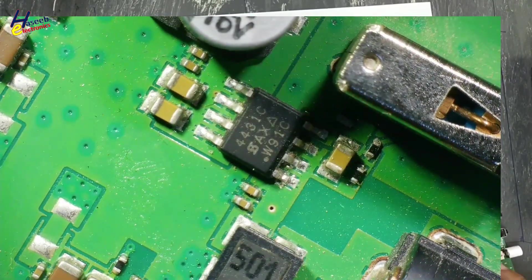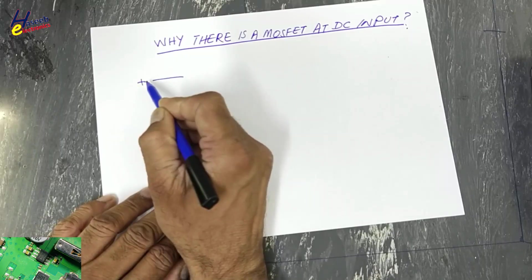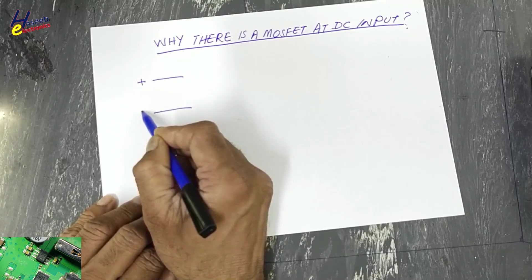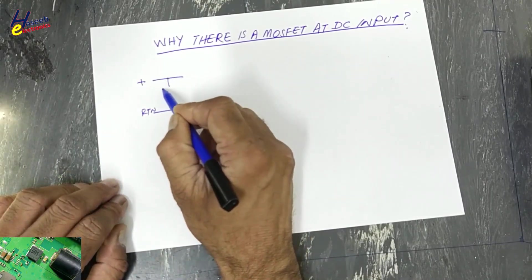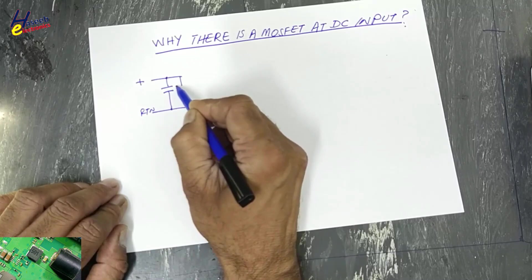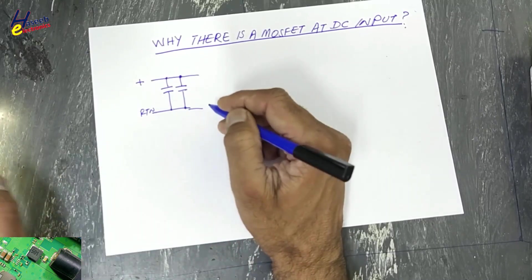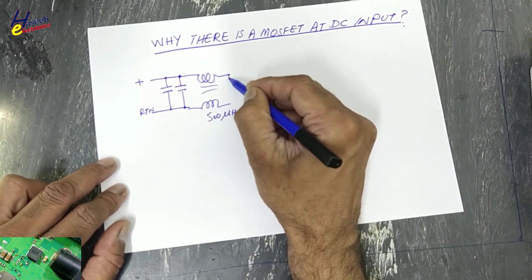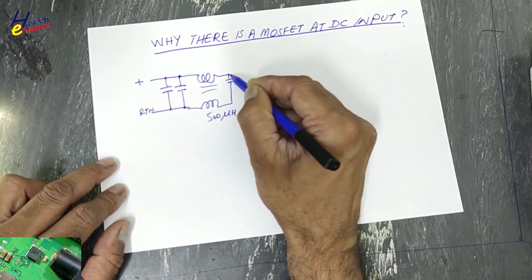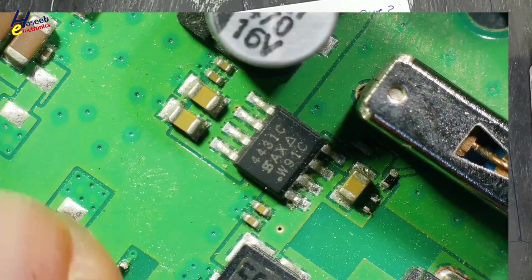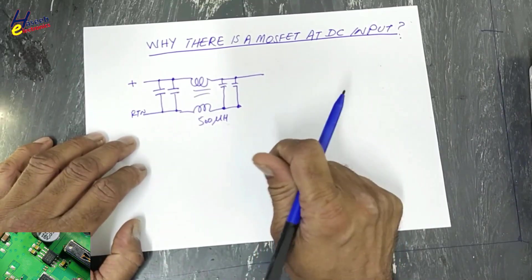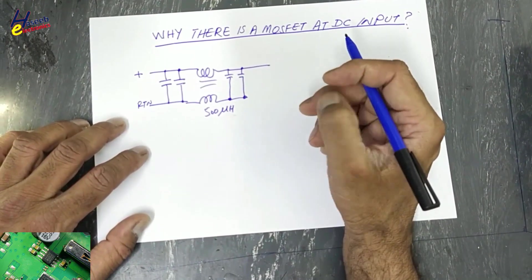Let's draw the circuit. Output positive DC line 12 volt, and this is the return path, then reaching to MLC capacitors. And then this voltage is reaching to this inductor, 500 microhenry. Then other capacitor bank, then this voltage is passing to this MOSFET. This P-channel MOSFET has very low RDS on. It is 9 ampere, 30 volt power MOSFET.